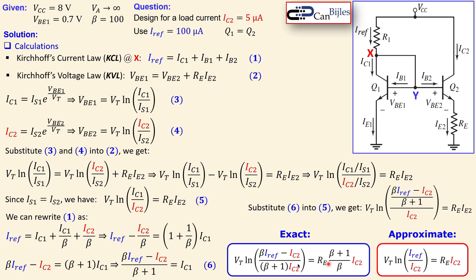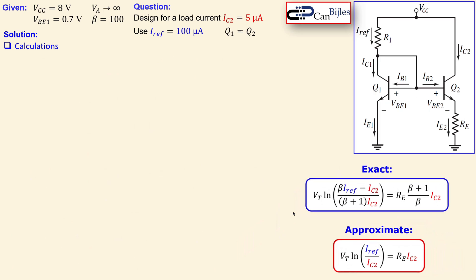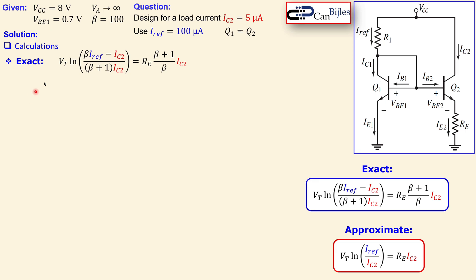In the approximate expression, β · IRF is much larger than IC2, so it dominates in the numerator. In the denominator, (β + 1) · IC2 divided by β · IC2 is approximately 1, giving IRF / IC2 in that expression. You can solve this to find the required parameters, or use the exact formula for a more precise value. We'll look at both.